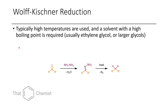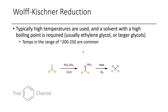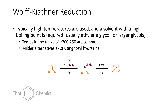Now for the Wolff-Kishner reduction. Typically you need very high temperatures — around 200 to 250 degrees Celsius — and strong base like potassium hydroxide. At those temperatures, potassium hydroxide is no joke considering water boils at 100 degrees. The reaction goes through the intermediacy of a hydrazone, and then treatment with base gives the CH₂ group. Milder alternatives include tosyl hydrazine, which forms hydrazones even better; isolating them first and then using sodium hydride at around 65 degrees is much milder.